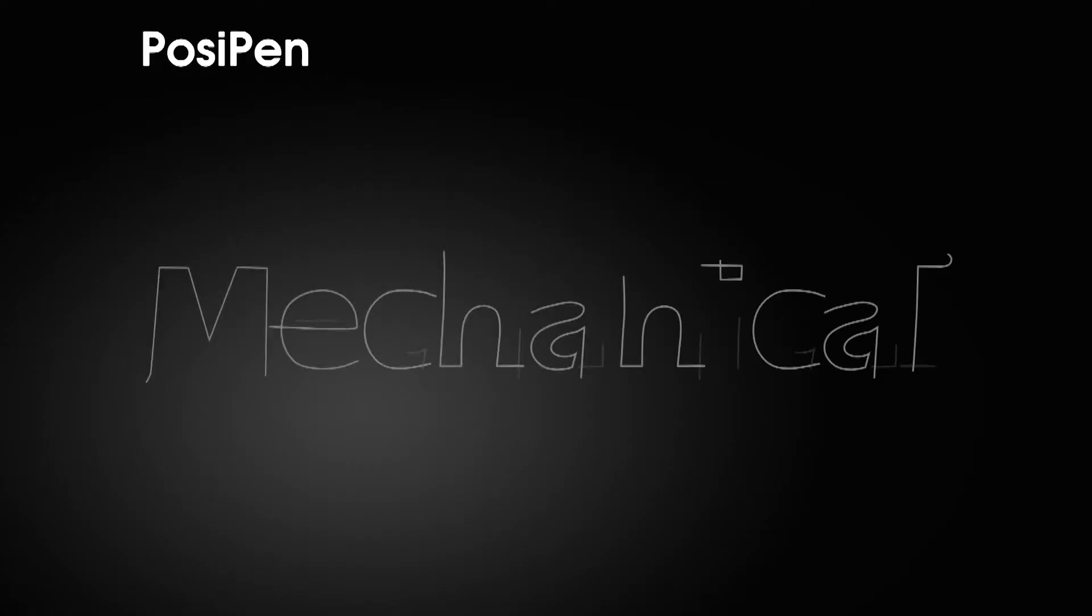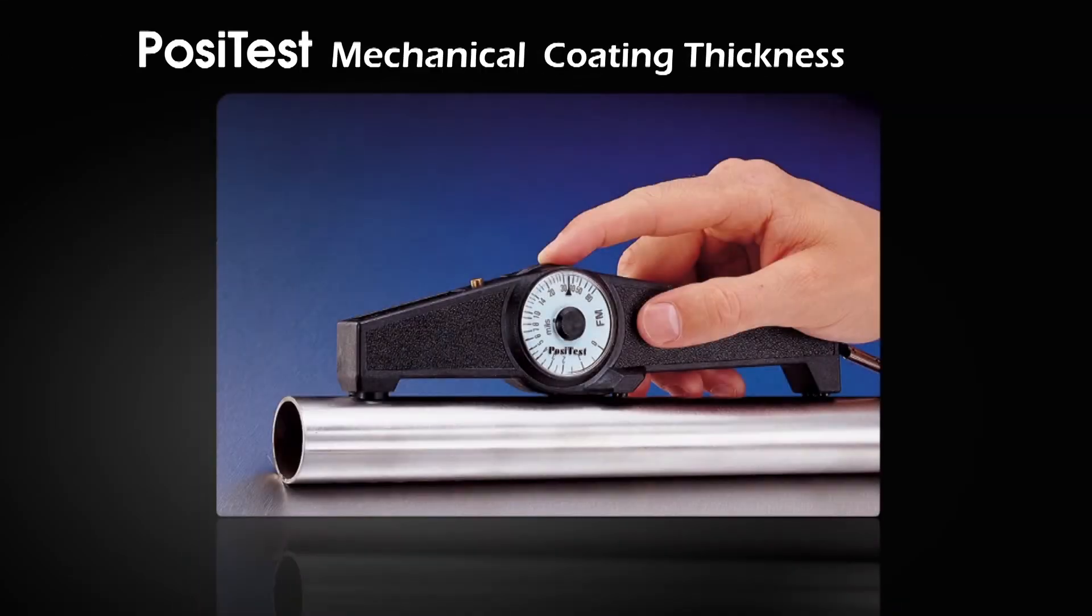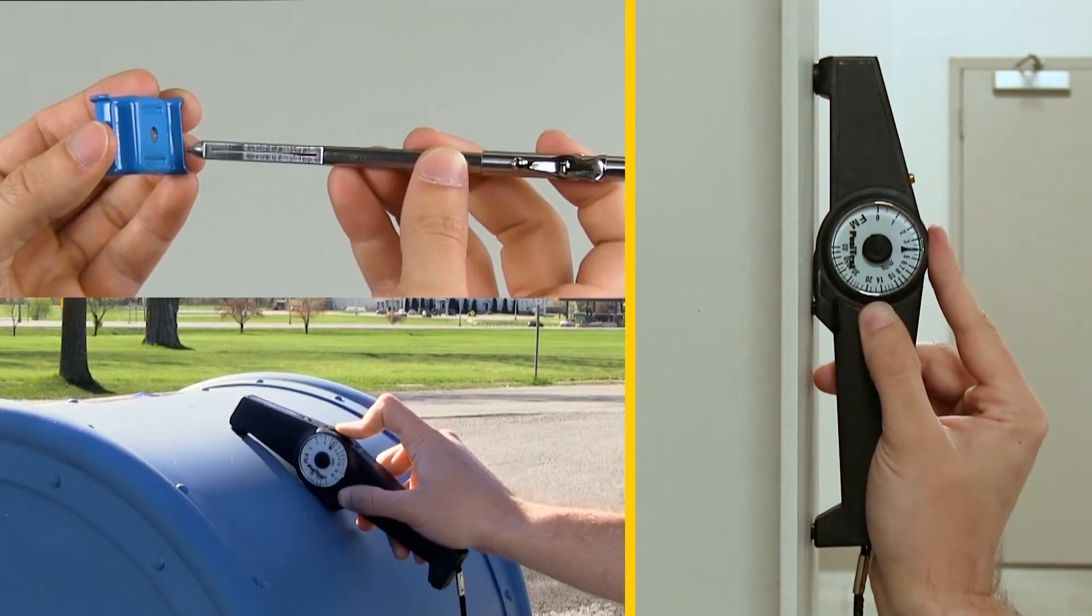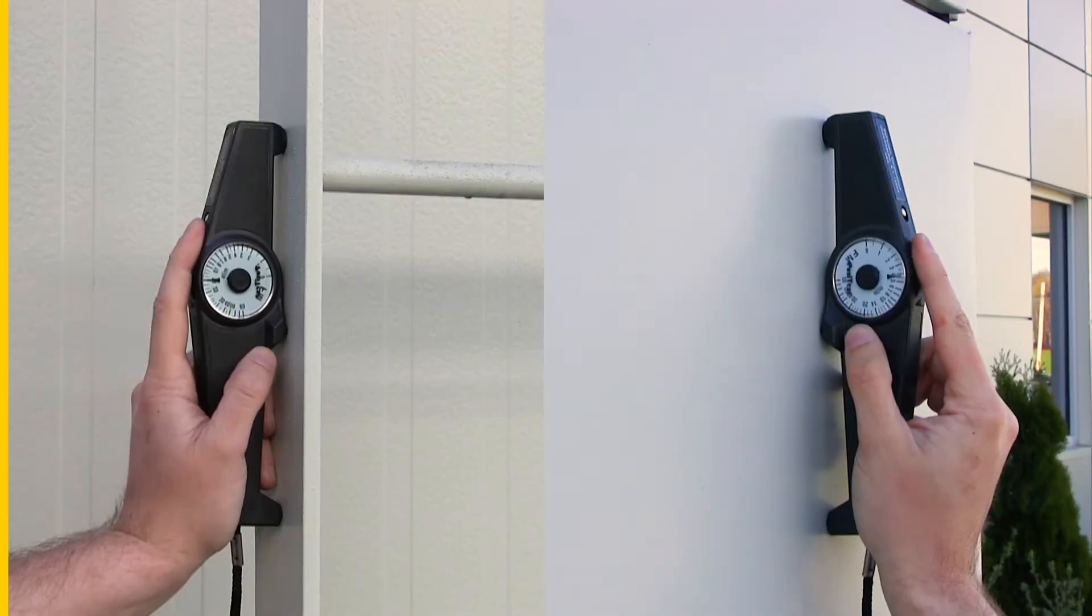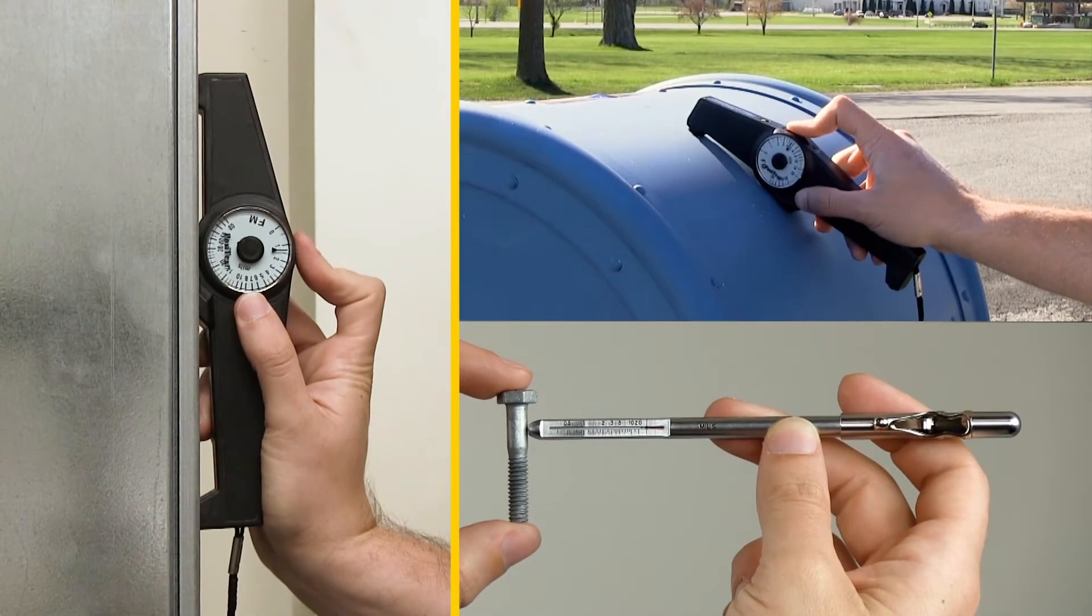The PosiPen and Positest are mechanical pull-off type 1 instruments that measure over steel substrates. They are simple to use and require no electronics or batteries. They are a rugged, low-cost alternative in situations where quality goals require only a few readings.